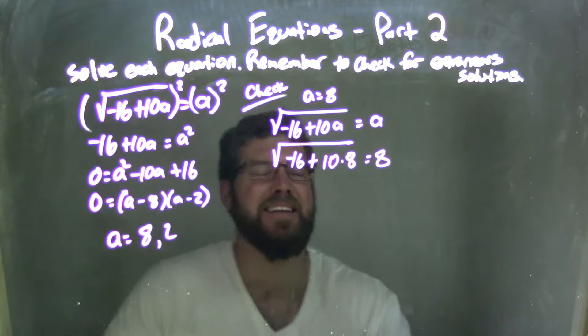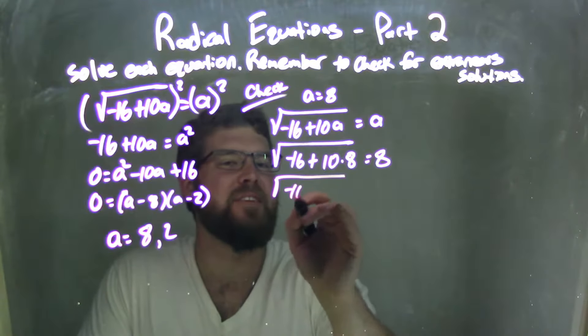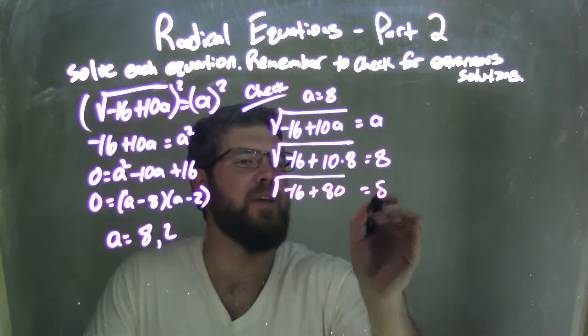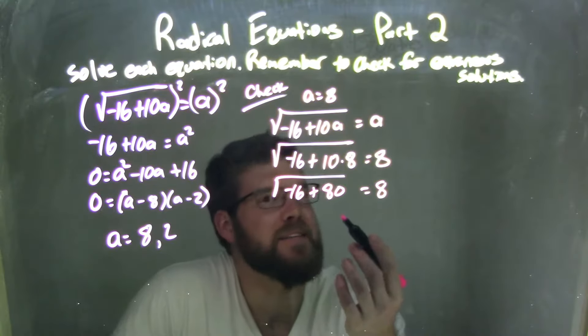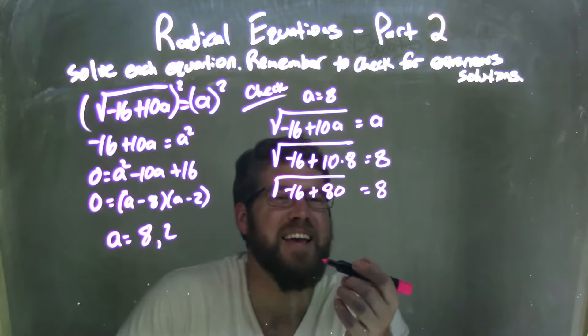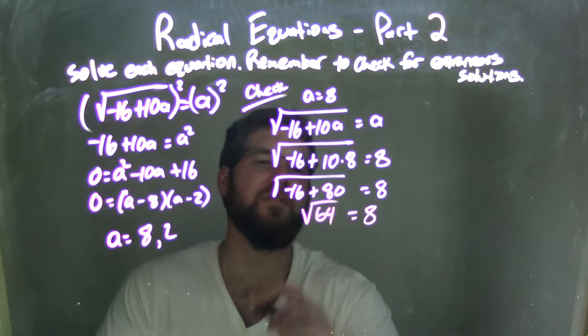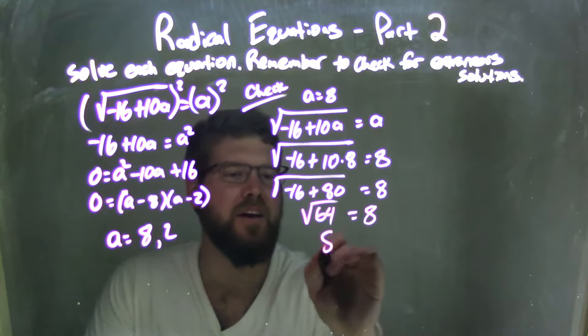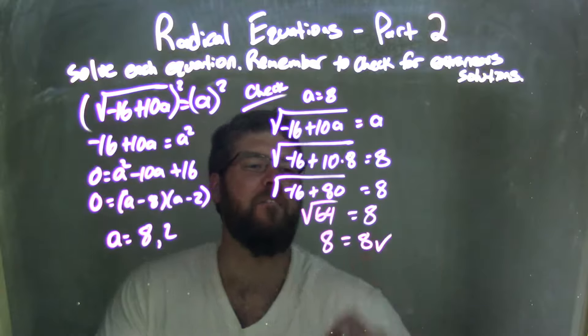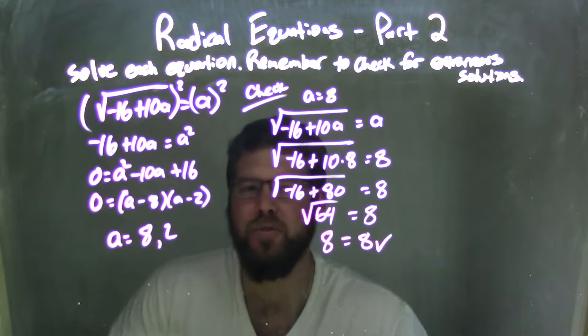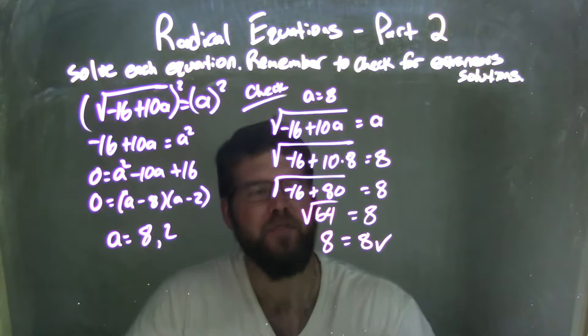10 times 8 is 80, so we have negative 16 plus 80 equals 8. 80 minus 16 gives us 64, so the square root of 64 equals 8. The square root of 64 is just 8, and so 8 equals 8. Fantastic. That's a true statement, making a equals 8 true, not extraneous.